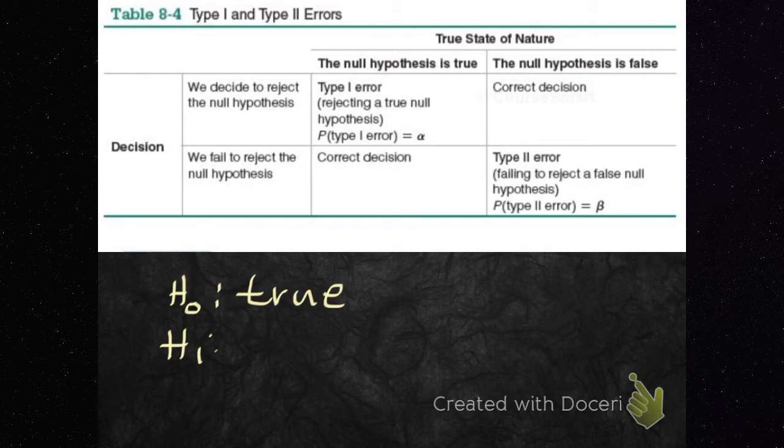Type 1 and Type 2 errors in a relationship. All right, so you're gonna assume that your girl is not cheating on you. You assume that she's true. So what happens if you assume she's true and she's actually cheating? Which kind of error is that?